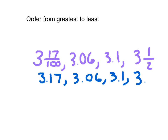So 3 and 1 half is 3.5. Oftentimes people like to put a 0 after so that each of these numbers has the same number of decimal places. Sometimes people like to write their decimals vertically so that the digits line up. Let's look at the whole numbers first: 3, 3, 3, 3 — they're the same. Going from greatest to least, they're all in the ones place. The tenths place is 1 compared with 0, compared with 1, compared with 5 — the 5 being the biggest.